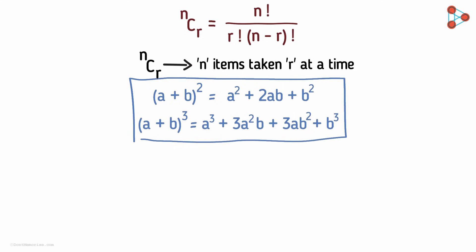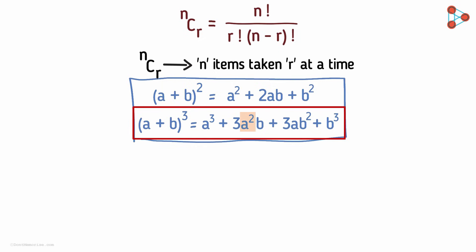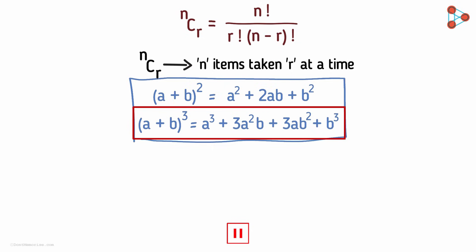Look at the formula of (a + b) cubed and observe each term. The power of a in the first term is 3, then 2, then 1, and in the last term a does not appear at all, meaning its power is 0. So the powers of a are 3, 2, 1, 0. The powers of b in each term are 0, 1, 2, and 3.